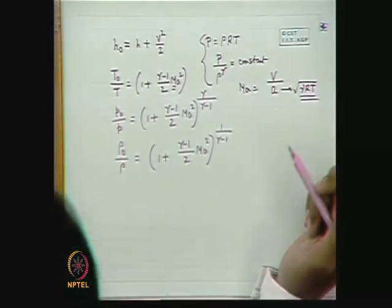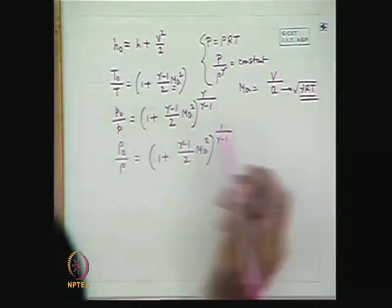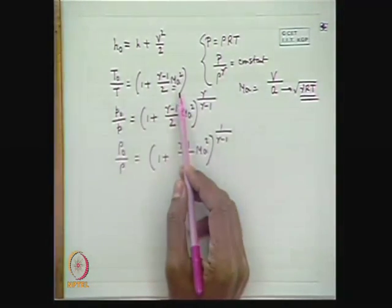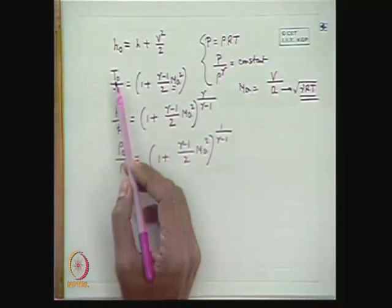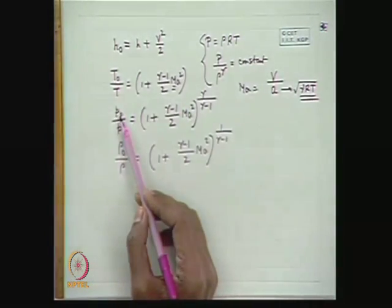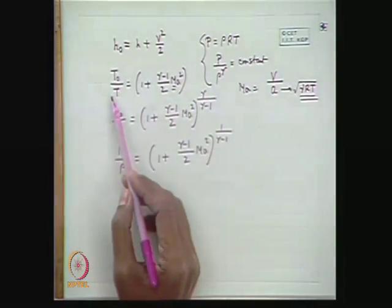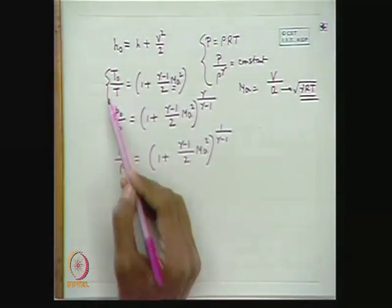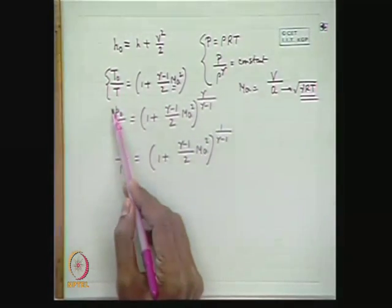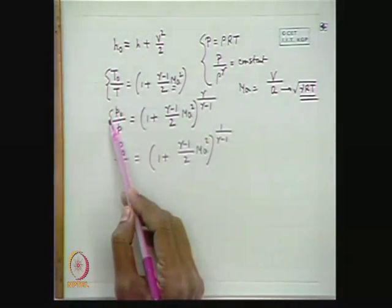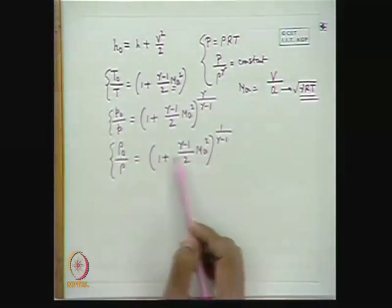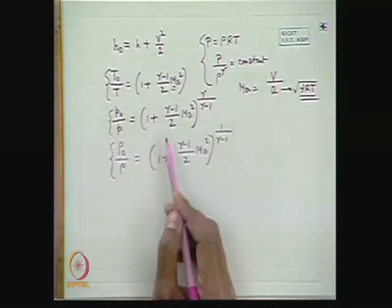The constraints for these definitions are as follows: the stagnation temperature does not require isentropic conditions, but for stagnation pressure and stagnation density, the flow must be isentropically brought to rest — that is, reversible and adiabatic.